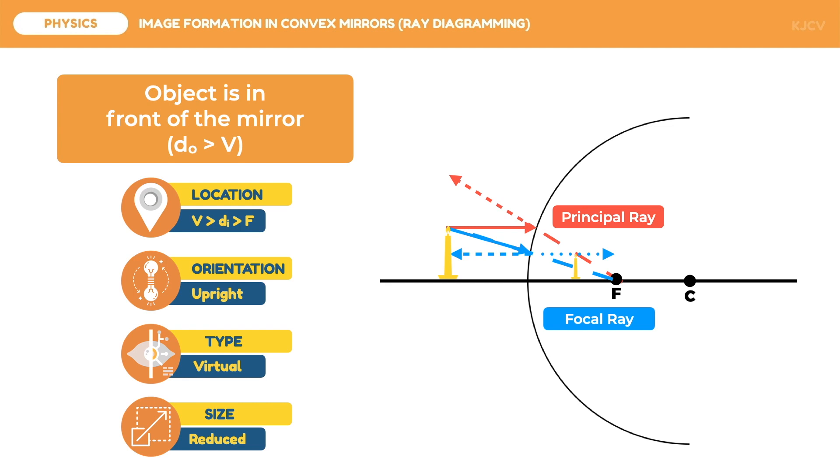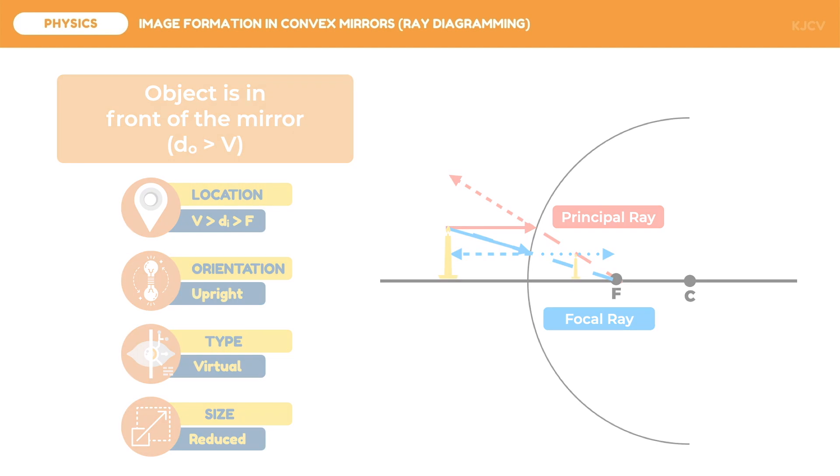In summary, for an object placed anywhere in front of a convex mirror, the image will be in between V and F, upright, virtual, and reduced. To conclude this lesson, let us review the following key points.